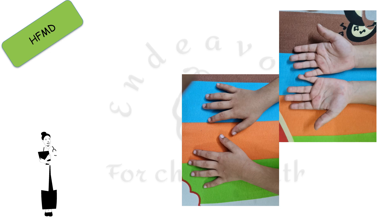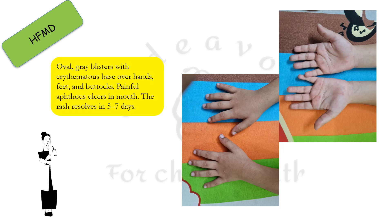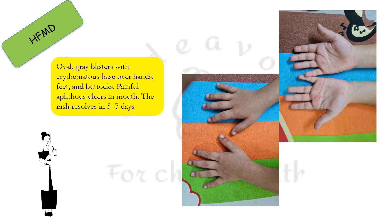Hand, foot and mouth disease, which recently became very common, is characterized by oval, grey, blisterous rashes with an erythematous base over the hands, feet, and buttocks. Painful aphthous ulcers can be seen in the mouth, and the rash generally resolves by itself in 5 to 7 days. The management of most viral illnesses is conservative.